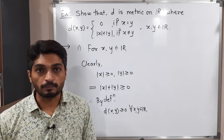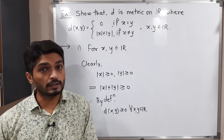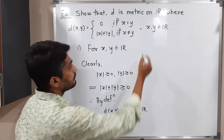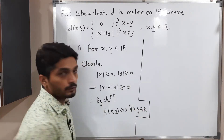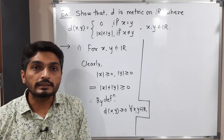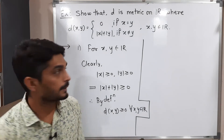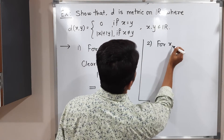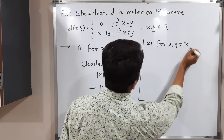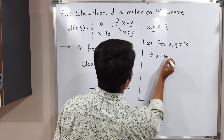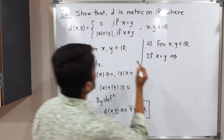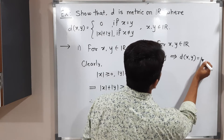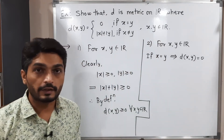The second condition is: D(X,Y) = 0 if and only if X = Y. We cannot prove it directly. We consider two parts. First, if X = Y, the definition directly says D(X,Y) = 0, so D(X,Y) = 0 by definition. That completes one direction of the proof.